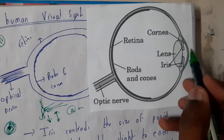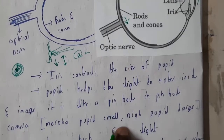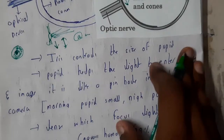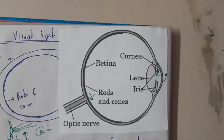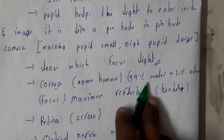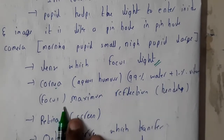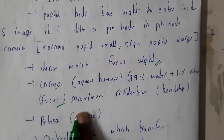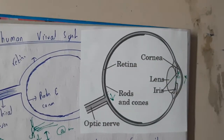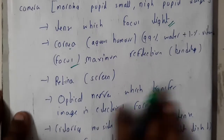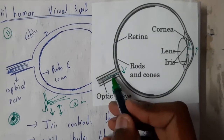The lens helps in the focusing of light. In this area we have a liquid called aqueous humor, which consists of 99% water and 1% vitamins, used for focusing of light and images. It helps in maximum refraction by bending light. We also have the retina — in simple words, the retina is your display screen, where the inverted image will be displayed.